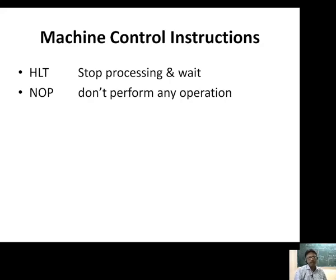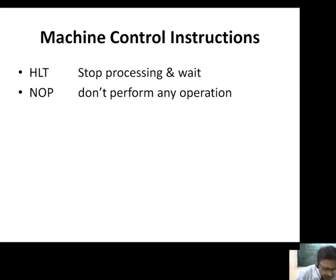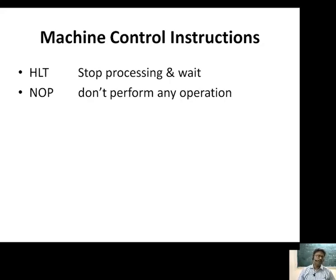We also have machine control instructions. There are two: HLT (HALT) and NOP (No Operation). HALT means to completely stop and end the execution of the program — whatever is written after it will not be executed. NOP does not perform any operation but execution can resume after it. The difference is: HALT permanently stops execution, while NOP temporarily stops it — NOP is used to increase time delay within the program.